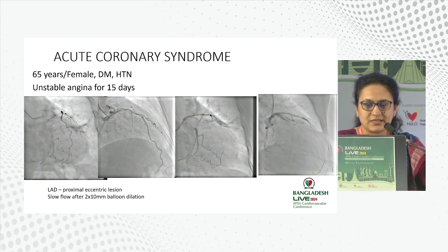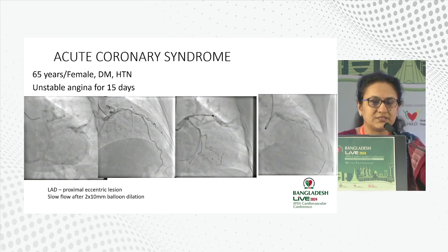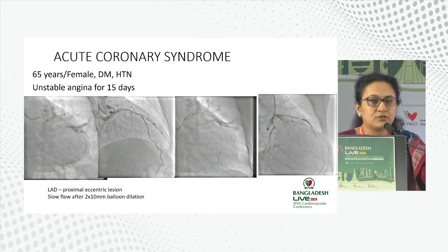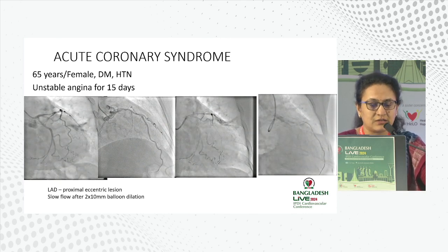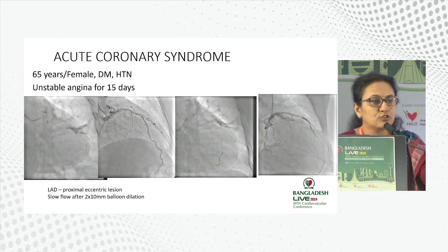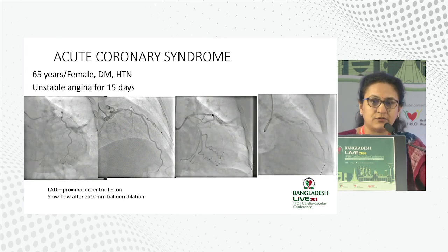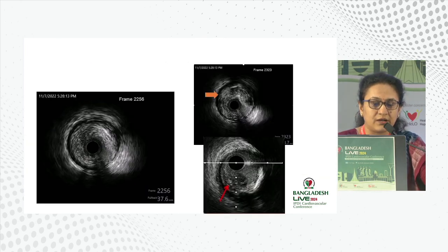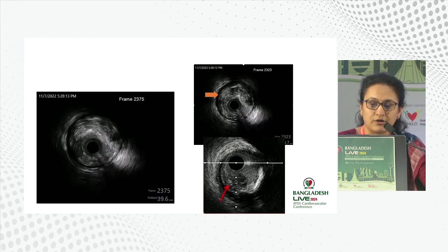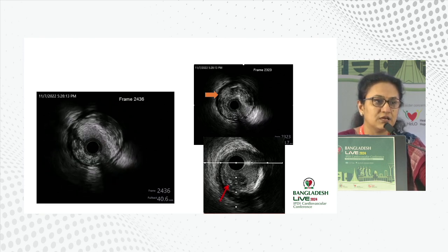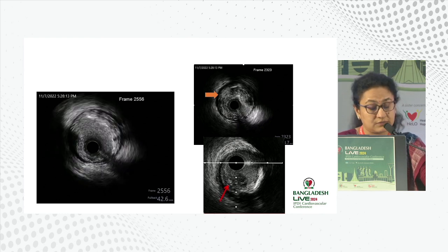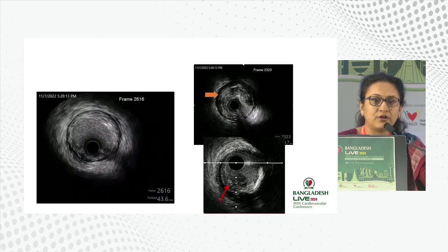Coming to a case — this looks like a simple case of acute coronary syndrome, a 65-year-old lady, our daily case of unstable angina. We did a dilatation with a 2 x 10 mm balloon. What we saw was slow flow. So we did IVUS, and IVUS showed a highly attenuated plaque, necrotic areas, and thrombus. So if we had done prior imaging in this case, we would not have ballooned and would have gone for direct stenting.